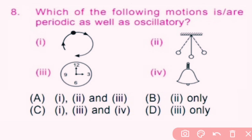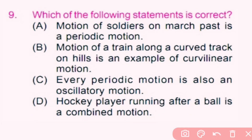Question number 8: Which of the following motions is/are periodic as well as oscillatory? Oscillatory motion is motion in which an object moves to and fro repeatedly. Periodic motion is motion in which the object repeats the path after a regular interval of time. Here only option 2 shows to-and-fro motion which is also repeated after regular time intervals, so only option B is the correct answer.